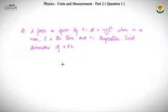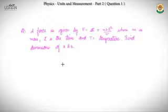The first question: a force is given by the equation F = At + MBt²/T, where M is mass, t is time, and T is temperature. We need to find the dimensions of A and B. This is a straightforward question in which we use the principle of dimensional homogeneity.